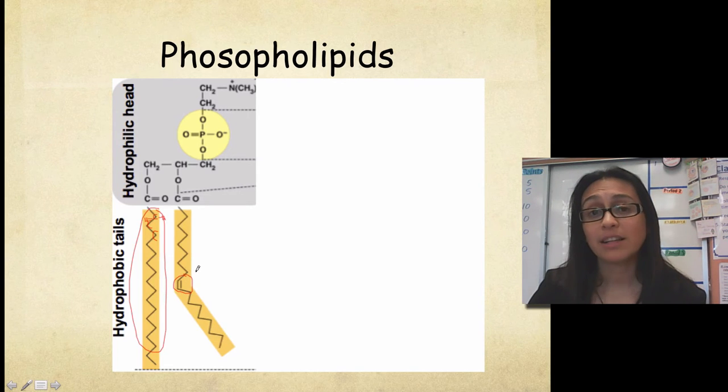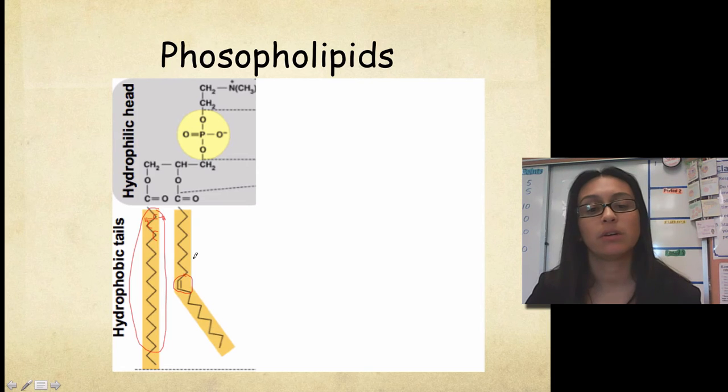Now when we looked at fats, fats had three fatty acid tails or fatty acid chains. Here in a phospholipid, it only has two. So that's one thing that's unique about a phospholipid structure. It has two fatty acid tails. So two fatty acid tails found in a phospholipid.